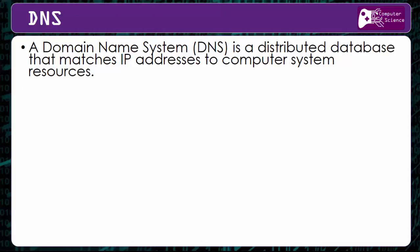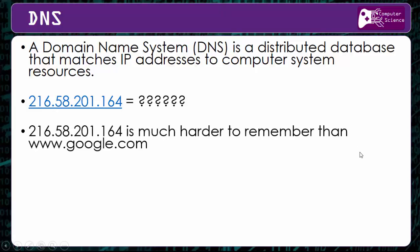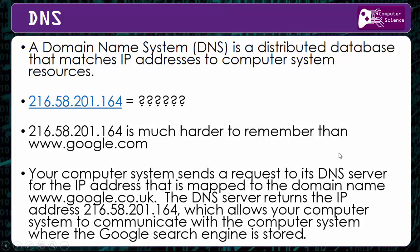DNS stands for Domain Name System, and it's a distributed database — a database stored in multiple places — and it matches IP addresses to computer system resources. For example, if you typed in this IP address into a web browser it will take you to google.com. But obviously, that's much harder to remember than simply typing in google.com, which is essentially what DNS is all about.